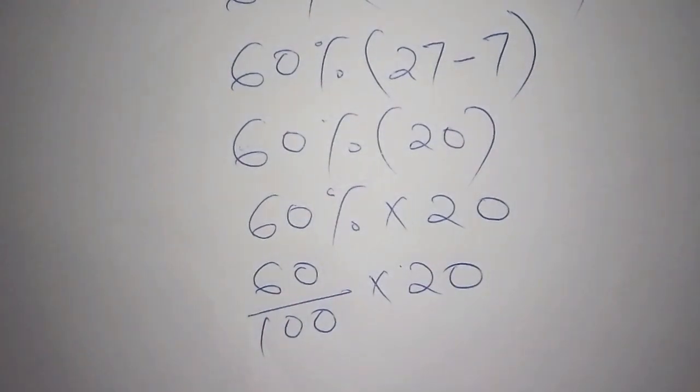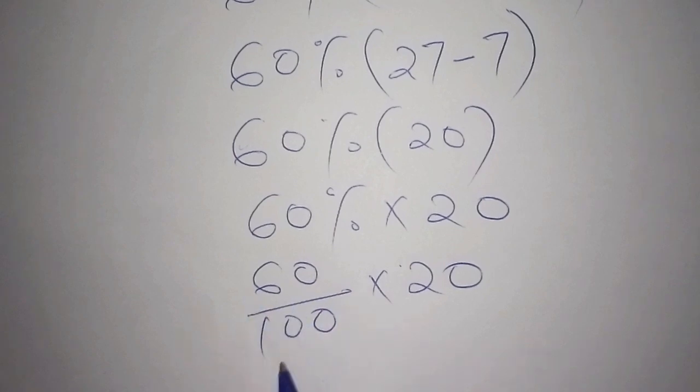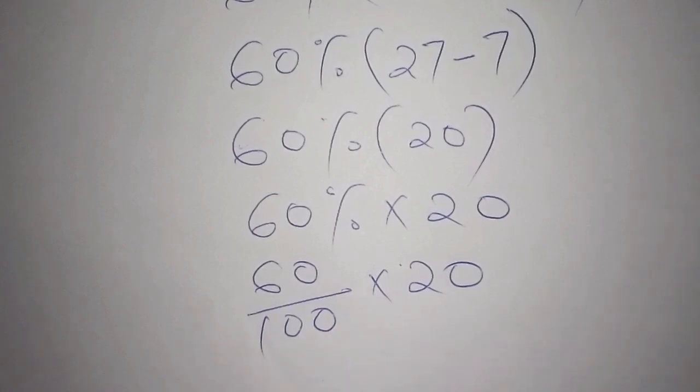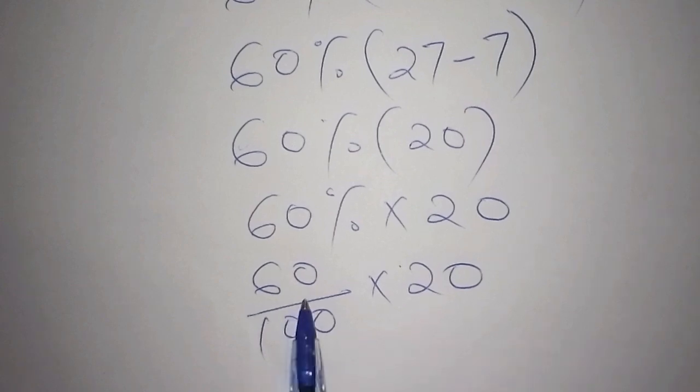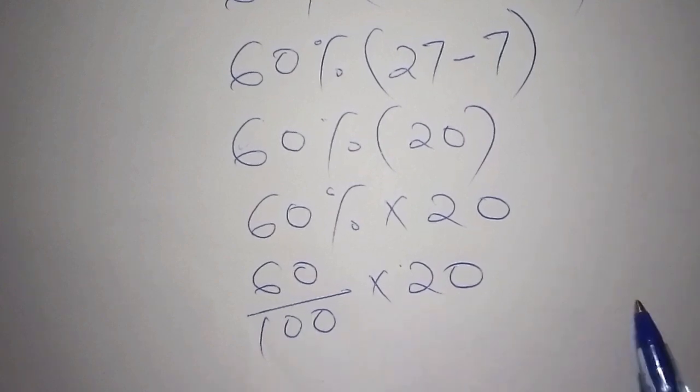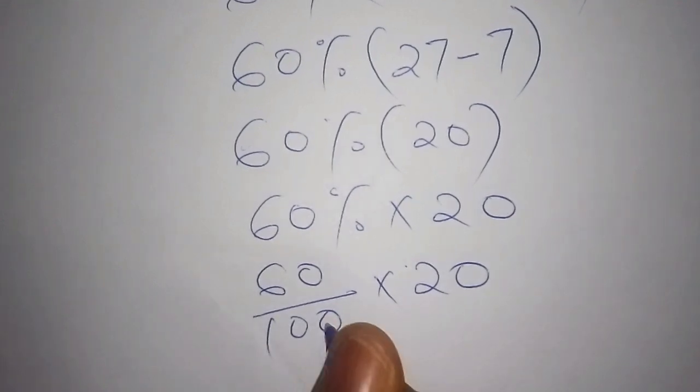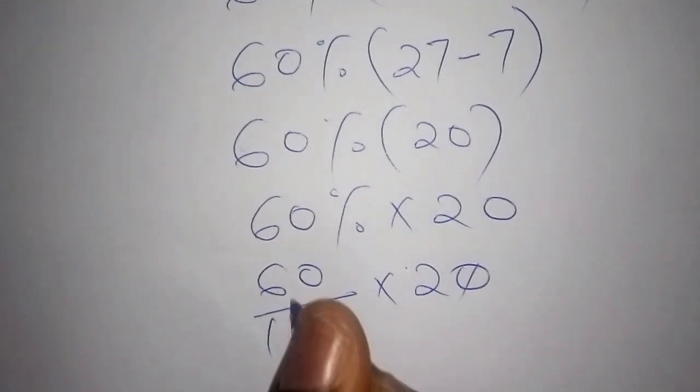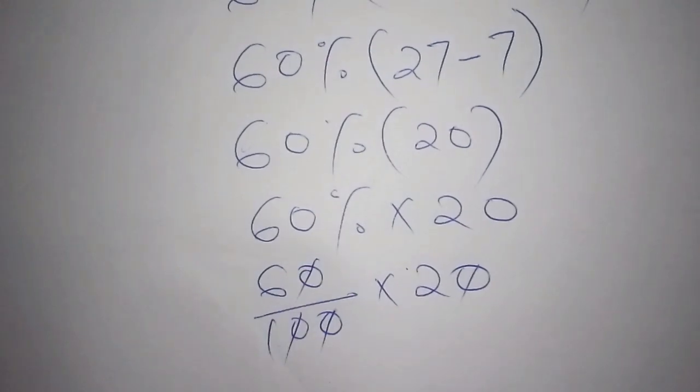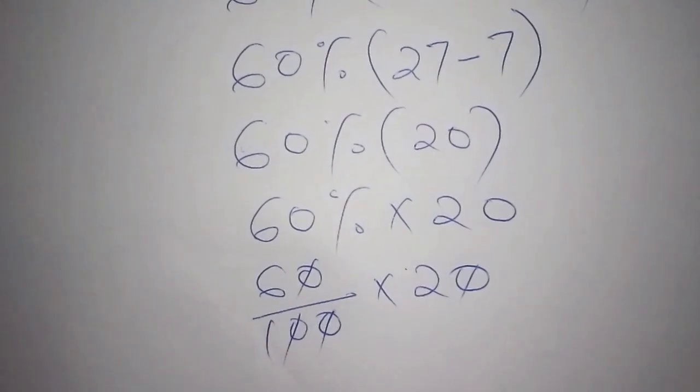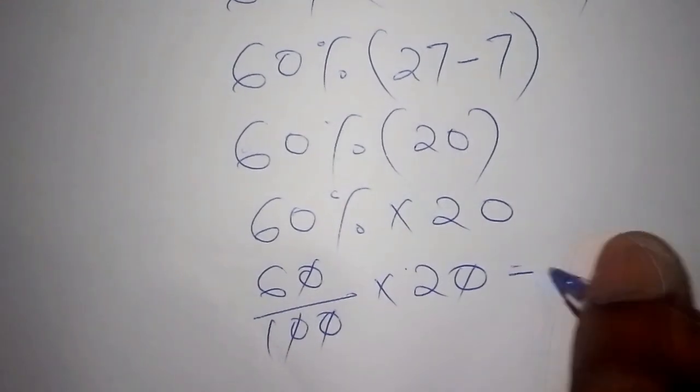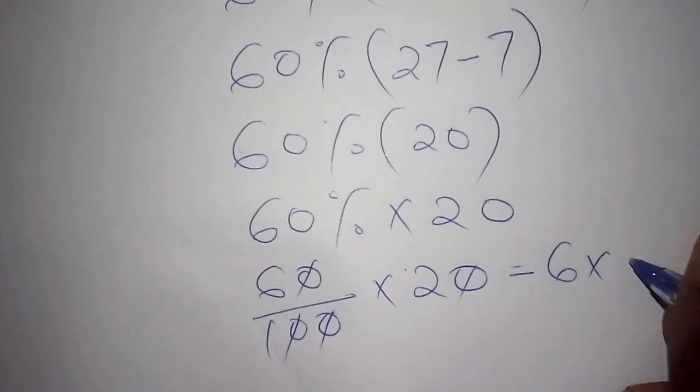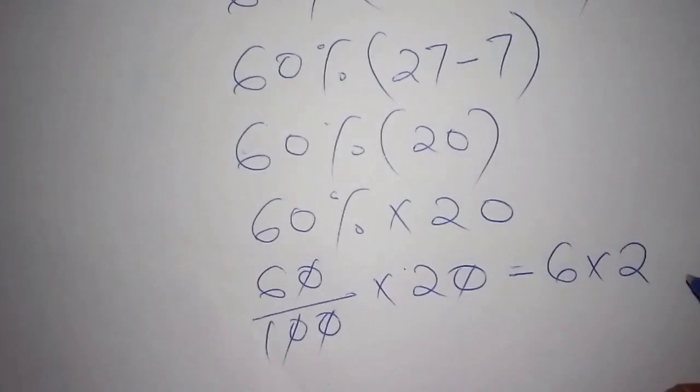So what do we do in our next step? We can decide to multiply 60 by 20 directly, or we can also decide to cancel the zeros. Like here, 0 cancel 0 and also 0 cancel 0. So finally we shall now have 6 multiplied by 2.